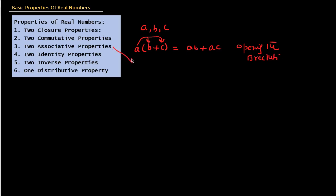This property tells us how to open brackets, just as the associative property tells us how to move brackets. With associative, you can write (A times B) times C or A times (B times C) — both are equal. With distributive, A times (B plus C) equals AB plus AC — you distribute A over B and C. There are 11 total properties of real numbers, and you should memorize them because you will use these properties throughout algebra for all number and variable operations.